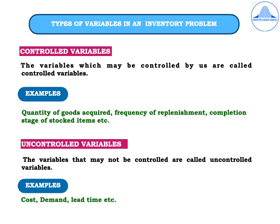Let me now explain the types of variables in an inventory problem. First, we have control variables — the variables which may be controlled by us. Examples are: quantity of goods acquired, frequency of replenishment, and completion stage of stocked items. Second, uncontrolled variables — the variables that may not be controlled. Examples are cost, demand, and lead time.